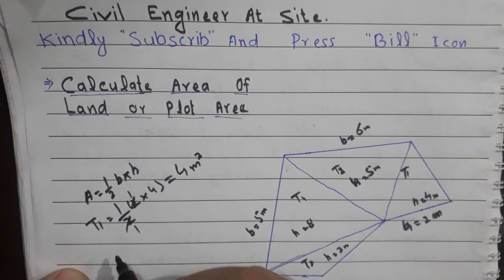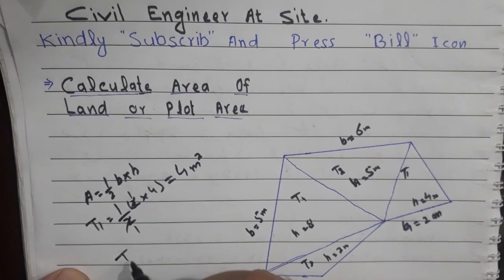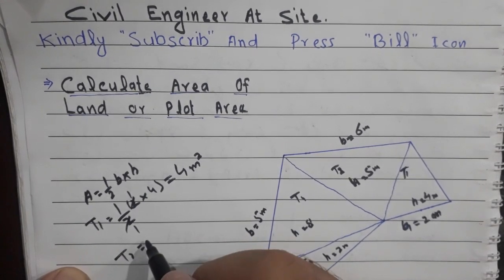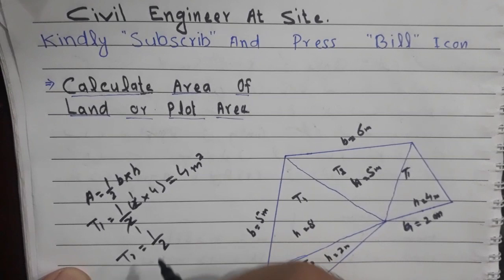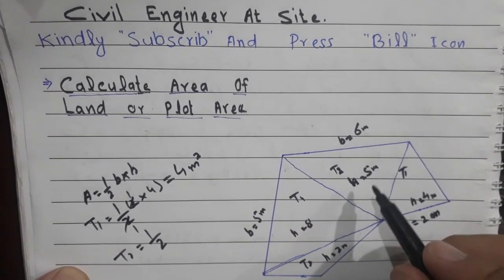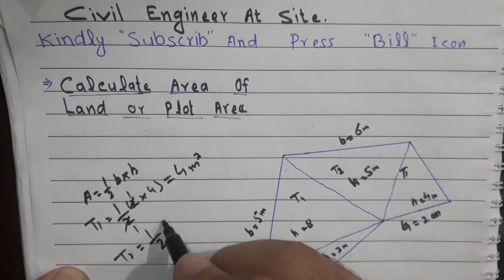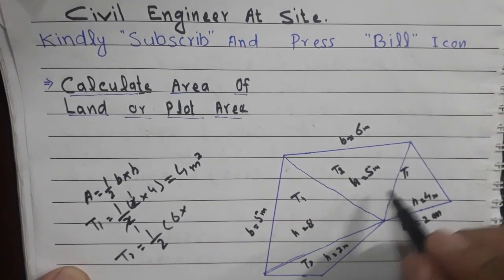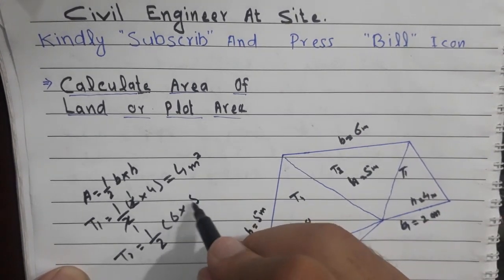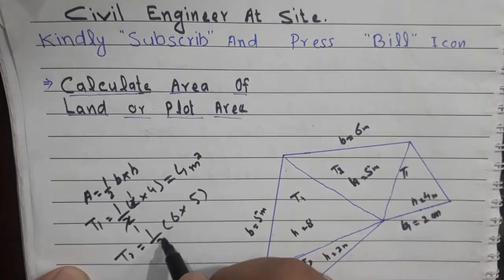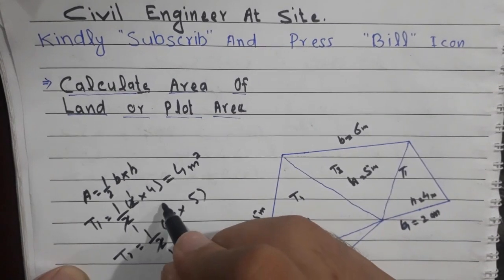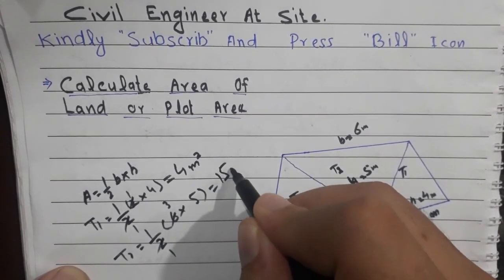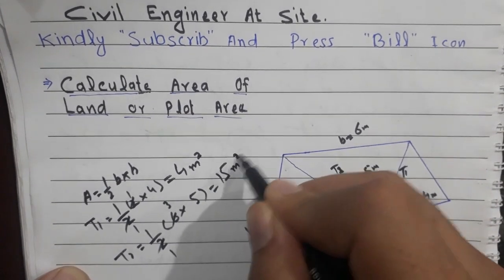Triangle number two: the base is 6 meters and the height is 5 meters. Area = (6 × 5) / 2 = 30 / 2 = 15 meters squared. So the area of triangle number two is 15 m².